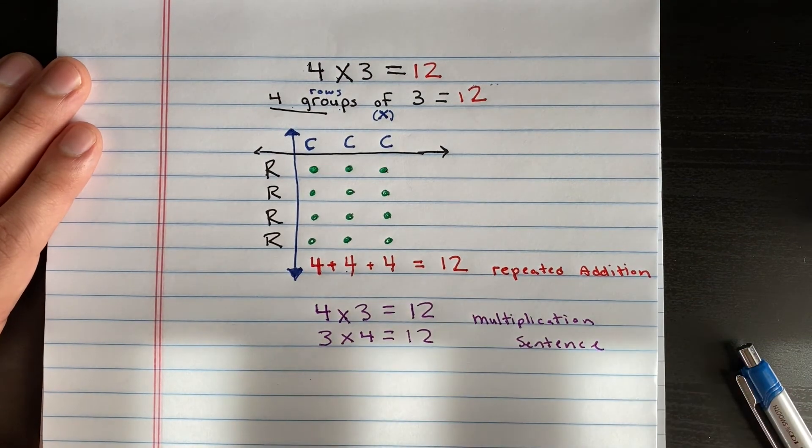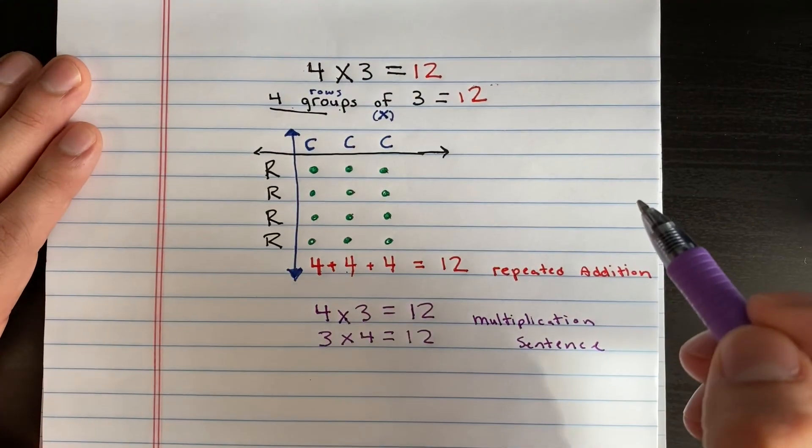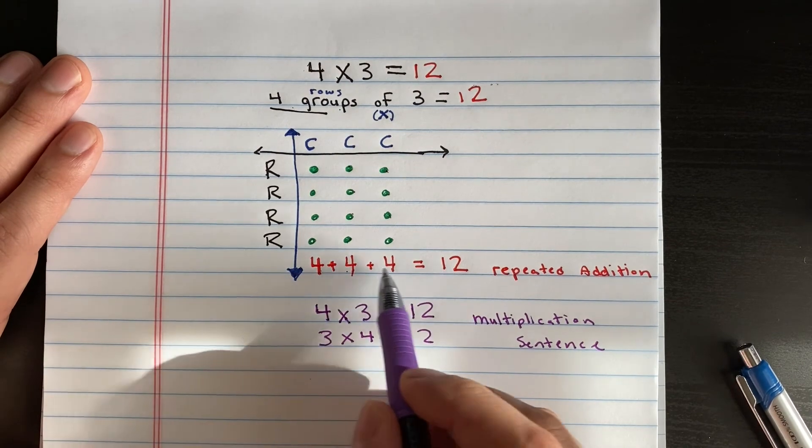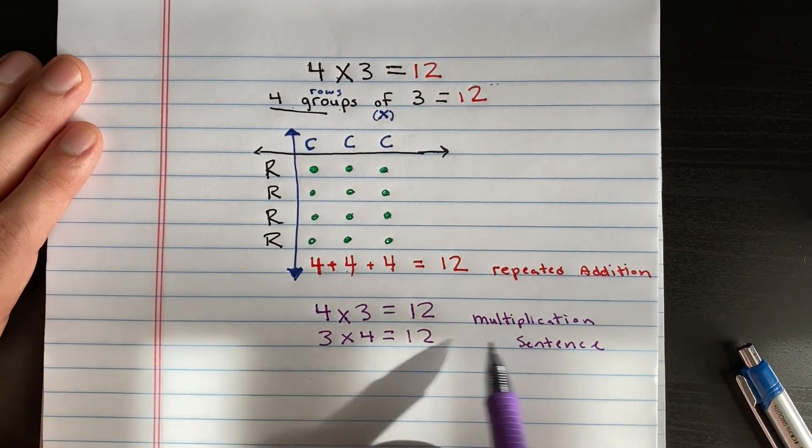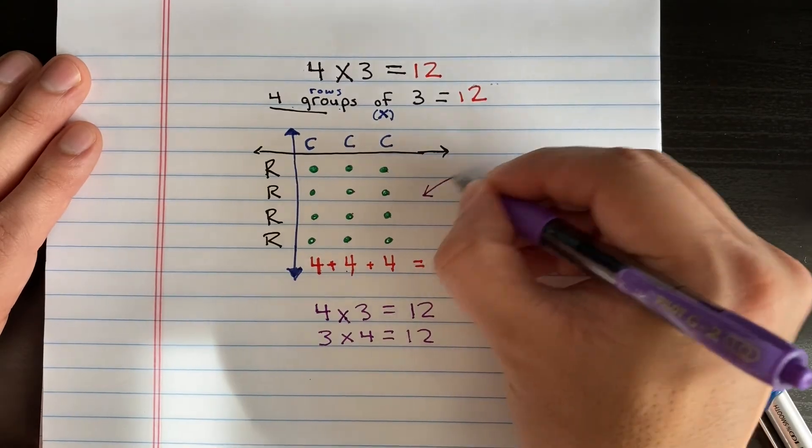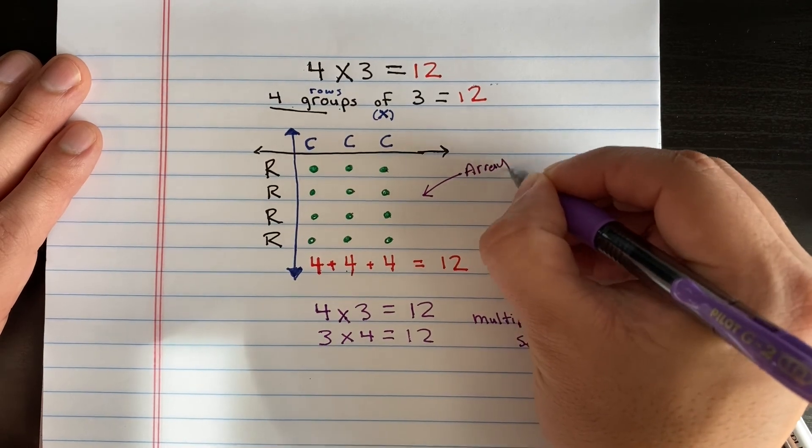All right, so there we have it. We now have the answer to three times four and our four groups of three. And we have a repeated addition sentence to check. We have a multiplication sentence. We have our array model. We're looking good. All right, let's try. Bye-bye.